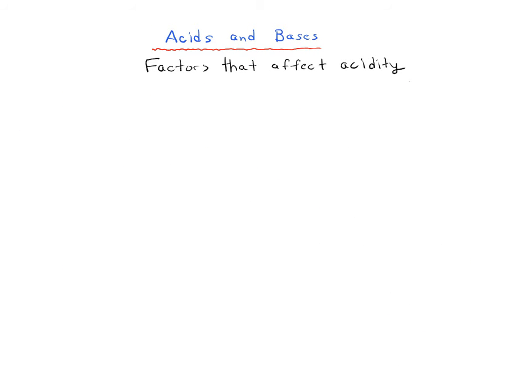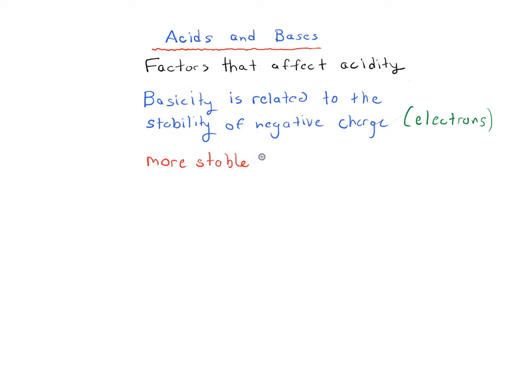So let's start talking about that first question. Basicity is really largely related to the stability of negative charge. And remember that negative charge is really just thinking about electrons. So the more stable those electrons are on a given atom, then the less basic that species will be. Or conversely, the more unstable it is, the more basic it will be. So more stable equals less basic, less stable equals more basic. That's a good rule of thumb to go through when thinking about acids and bases.